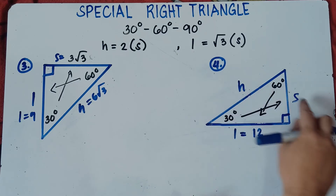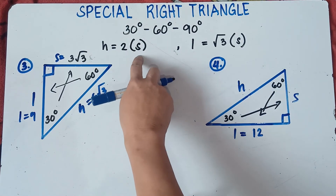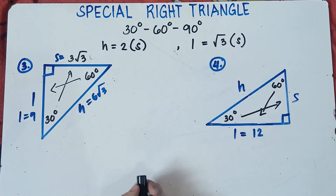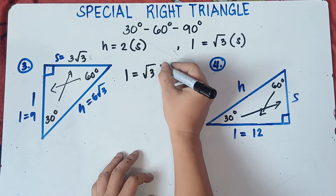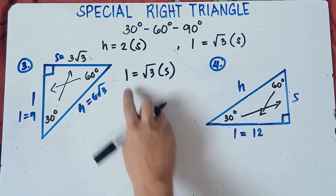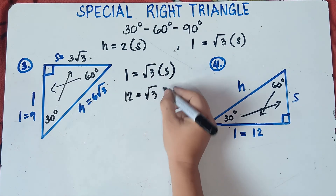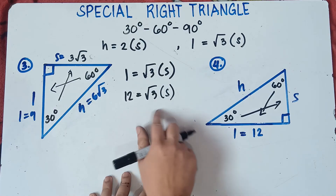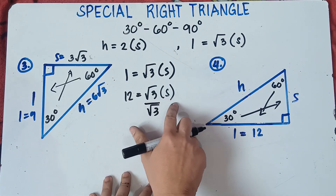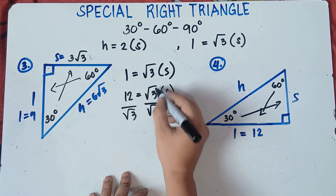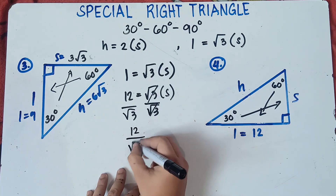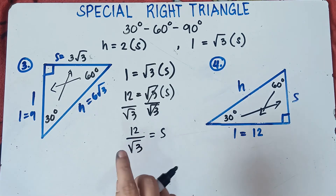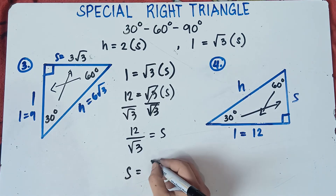We cannot find the hypotenuse directly because we don't have the shorter leg. But we can find it using the longer leg formula. The given longer leg is 12. So: L = √3 · S becomes 12 = √3 · S. Divide both sides by √3, giving S = 12/√3. Since we're not allowed a radical in the denominator, we need to rationalize.